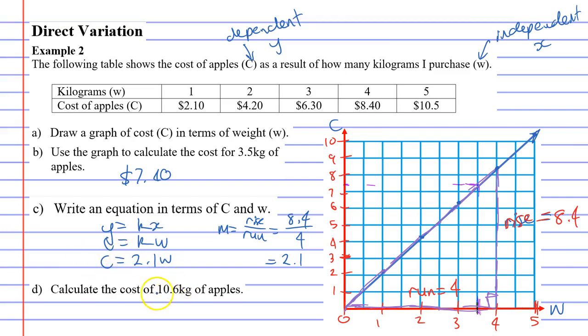Question D now. Calculate the cost of 10.6 kilograms. You now have an equation to work with, 2.1W, or 2.1 times 10.6 kilograms. What's that going to cost? It comes out to $22.26.